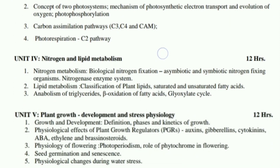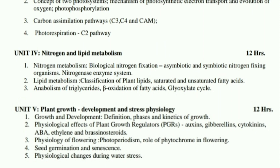Unit 4: Nitrogen and Lipid Metabolism. Nitrogen metabolism includes biological nitrogen fixation, asymbiotic and symbiotic nitrogen-fixing organisms, nitrogenase enzymes and enzyme systems for nitrogen fixation. Organisms and microorganisms fix atmospheric nitrogen, which plants then use for protein synthesis. Second — lipid metabolism: classification of plant lipids, saturated and unsaturated fatty acids, anabolism of triglycerides, beta-oxidation of fatty acids, glyoxylate cycle.